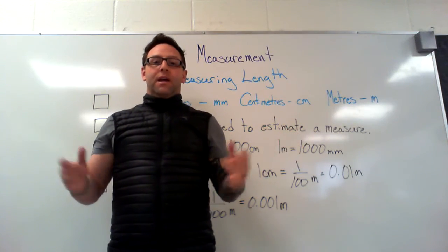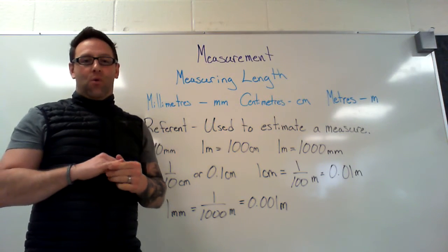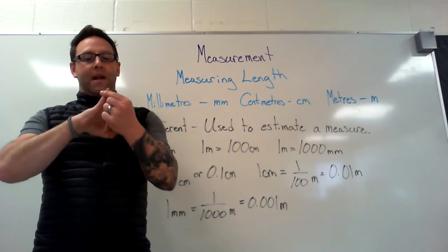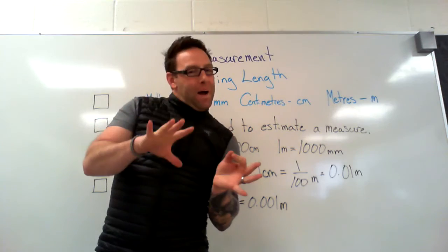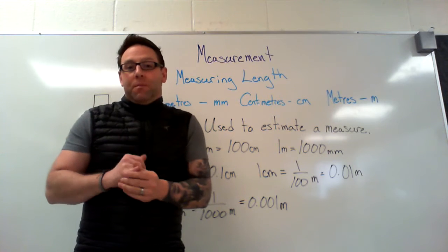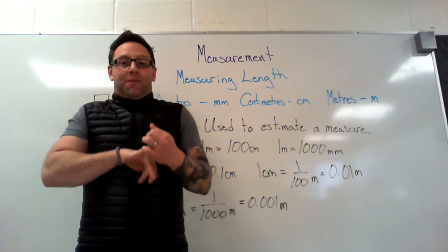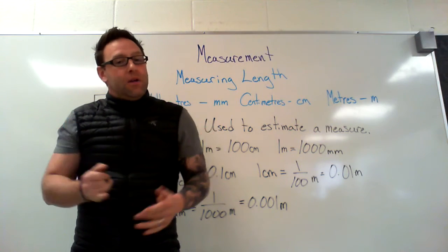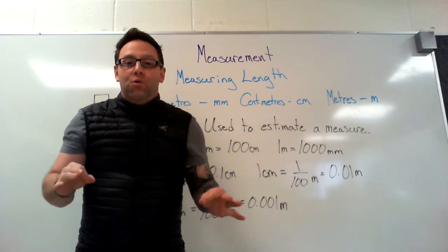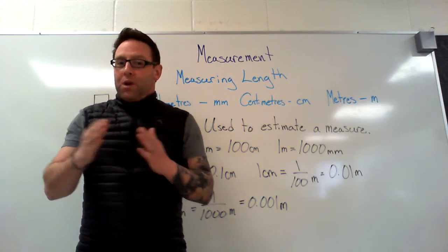Now let's talk about a referent for centimeters. If I wanted to estimate how long something is in centimeters, I could use my pinky finger — the width of my pinky finger is about the length of a centimeter. It might not be exactly right; some people might have really skinny fingers that are just a little bit shorter than a centimeter, and some people might have big fat sausage fingers that are a little bit bigger. But again, an estimation is just trying to get close, so if you use your pinky finger and blot along whatever you want to measure, you can get a good estimate in centimeters.